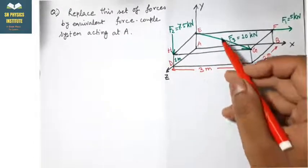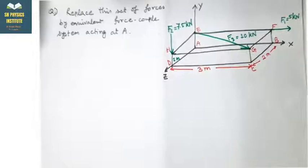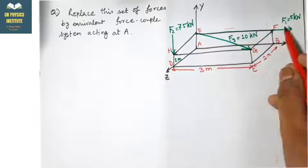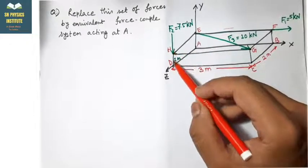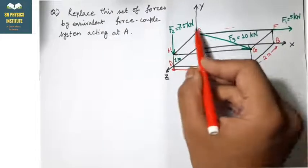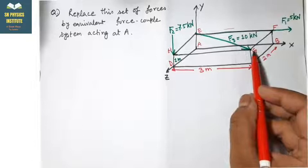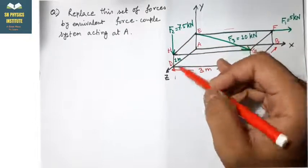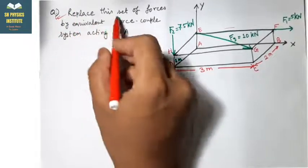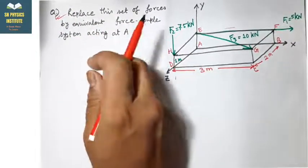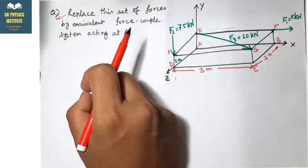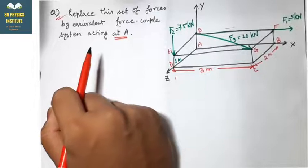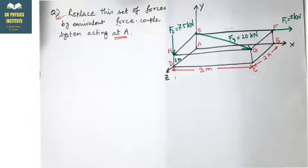The numerical is given with three forces: F1, F2, and F3. F1 is along the EF direction, F2 is along the negative Y axis (HD direction), and F3 is along the EG direction. The question asks to replace this set of forces by an equivalent force-couple system, so we have to find the resultant force and the moment of force with respect to a point.